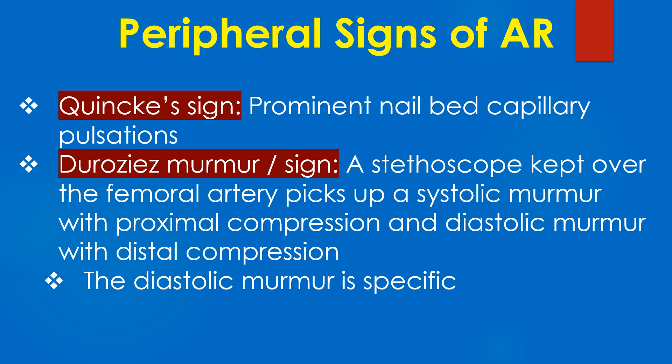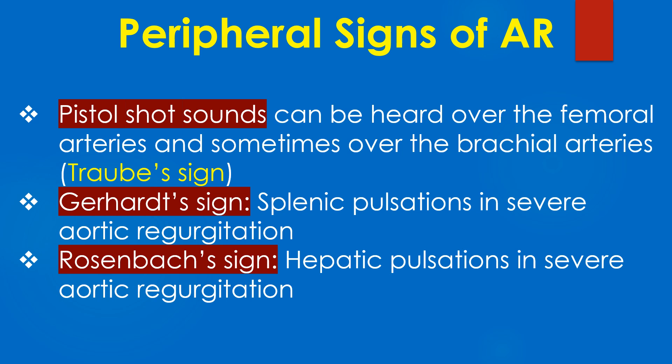Duroziez sign: a stethoscope kept over the femoral artery picks up a systolic murmur with proximal compression and a diastolic murmur with distal compression. The diastolic murmur is more specific. Pistol shot sounds can be heard over the femoral arteries and sometimes over the brachial arteries.